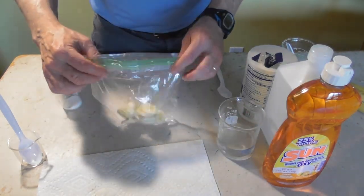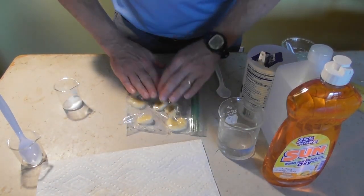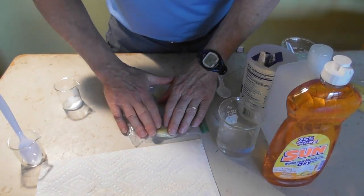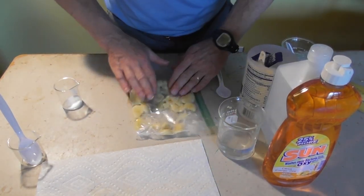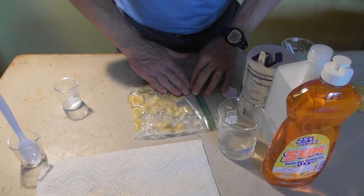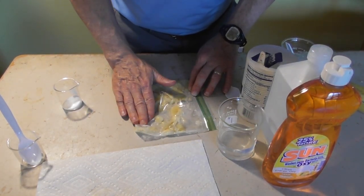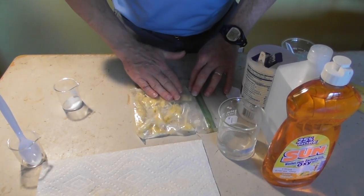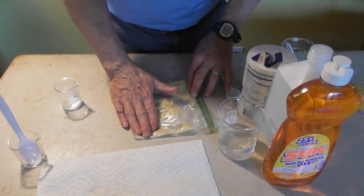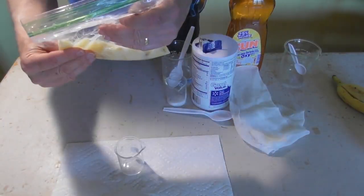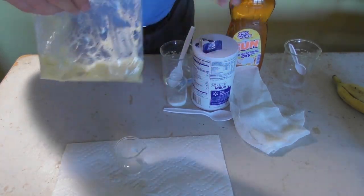Next seal this and just start smashing. And again you want it to be the consistency of baby food. Plastic bag works really well. I used to do it just in a bowl and the plastic bag works much, much better. I have squeezed it and you can see it is basically the consistency of baby food.